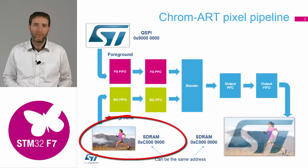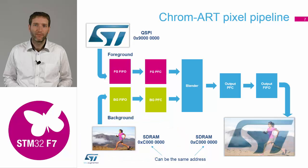Imagine you have a background in the framebuffer and you want to update it, or show a graphical element above the background. What you need to do is blend two pictures together and store the result back to the framebuffer. In our example, the background is a girl running in the mountains and the foreground element is the ST logo. The DMA2D can handle this entirely in hardware — fetching both the foreground and background streams simultaneously, optionally performing pixel format conversion independently on each stream, then blending them together with various settings, and storing the converted blended result to any memory location.